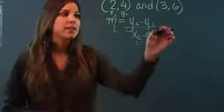Now that everything is labeled, I can go ahead and just substitute into the formula that I have. So y2 is 6, so I'm going to write 6 minus y1 is 4. I'm going to substitute it with 4 over x2 is 3 minus x1 is 2. Now I'm just simplifying: 6 minus 4 in the numerator is 2, over 3 minus 2 is 1.